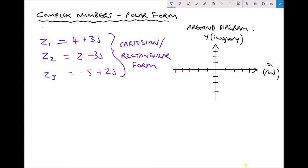On the left hand side we have Z1, Z2 and Z3, each of these are complex numbers expressed in the form we've seen previously. This form is either called the Cartesian or the rectangular form where we see the real and imaginary components separated. So Z1 has a real component of 4 and an imaginary component of 3j, giving us the complex number 4 plus 3j.